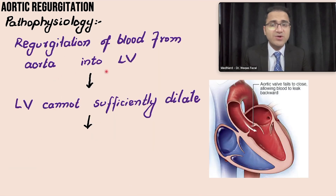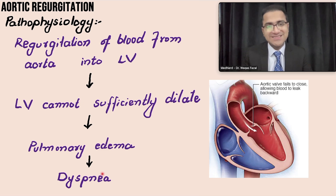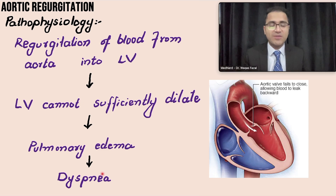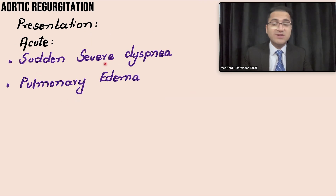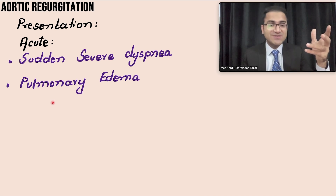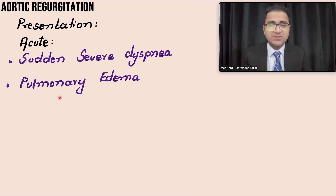Regurgitation of blood from the aorta to the left ventricle means the LV cannot sufficiently dilate, so pulmonary edema develops, resulting in dyspnea. In acute aortic regurgitation, patients develop sudden severe dyspnea and may come to the emergency department with severe pulmonary edema requiring furosemide (Lasix). In chronic cases, common complaints are palpitations — feeling the heartbeat pounding — and angina.